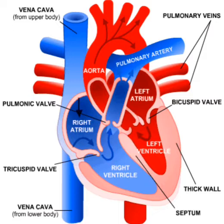The heart is divided into chambers to prevent the mixing of two types of blood: oxygenated and deoxygenated blood. Oxygenated blood is blood which is rich in oxygen, and deoxygenated blood is blood which is rich in carbon dioxide. These two types of blood are flowing throughout our body, and to prevent their mixing, the heart is divided into four chambers.